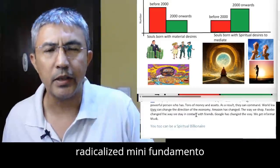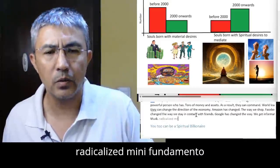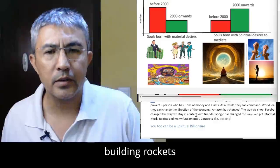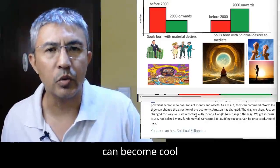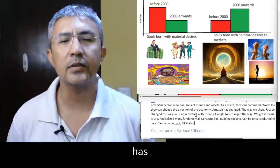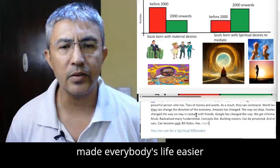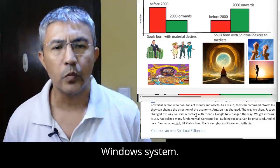Elon Musk radicalized many fundamental concepts like building rockets can be privatized and electric cars can become cool. Bill Gates has made everybody's life easier with his Windows system.